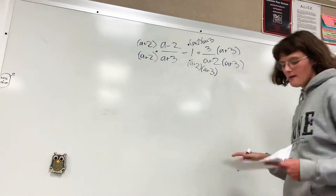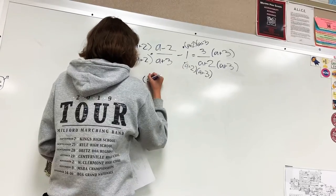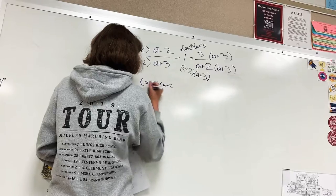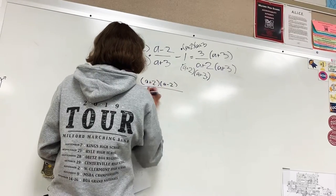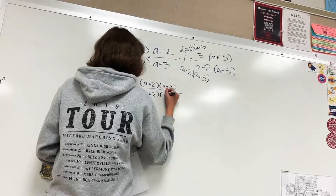So what you're going to end up with in the next step is (a+2)(a-2) over (a+2)(a+3).